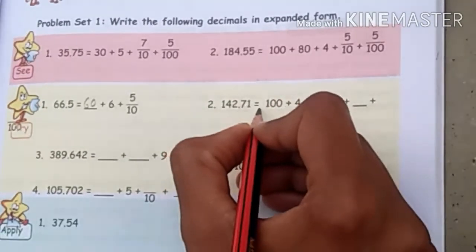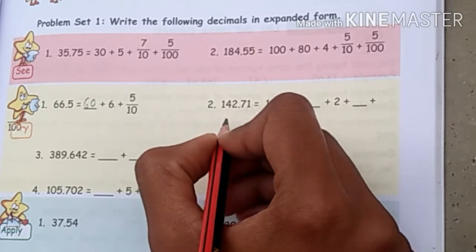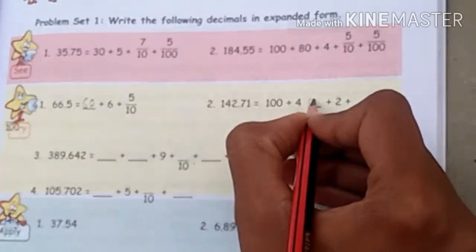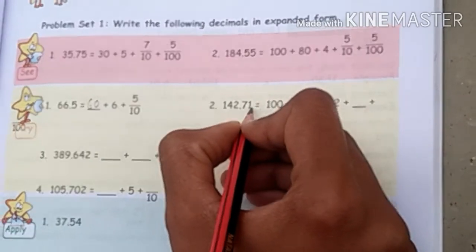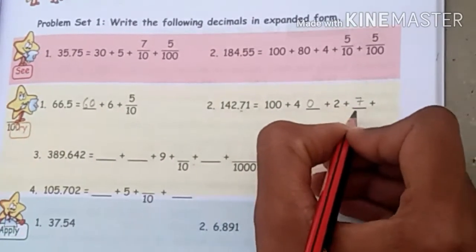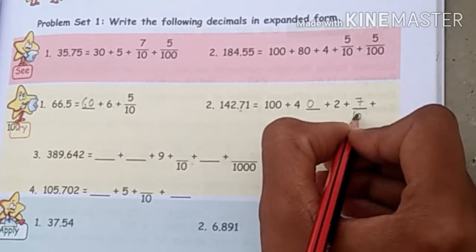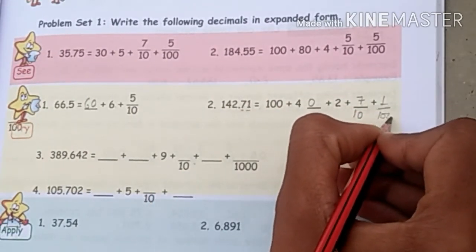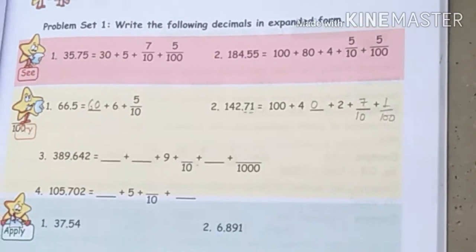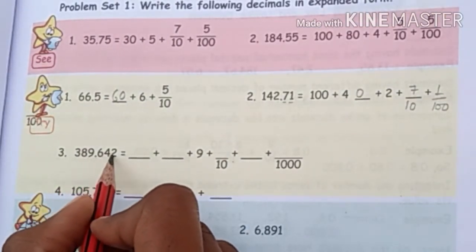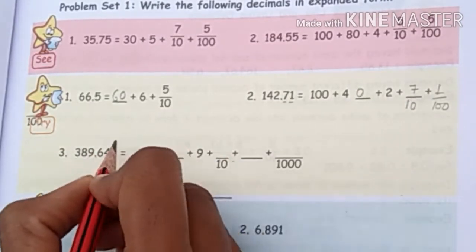Next question: 142.71. For 142, the expanded form is 100 plus 40 plus 2. For the decimal part, 7 is the first digit just after the decimal, so 7 upon 10. The second decimal digit is 1, so 1 upon 100.